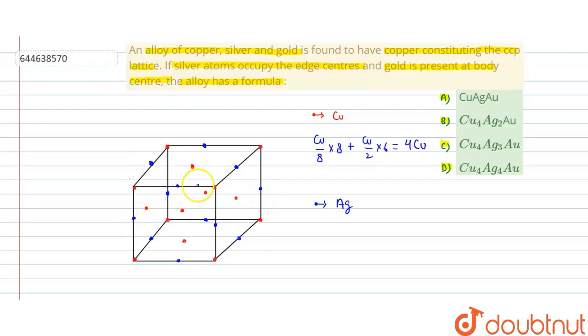So how much part? 1/4th part of this. That means we use the calculation: 1/4th part of Ag into total edges 12. So this is 3 Ag.